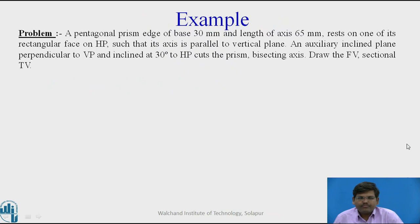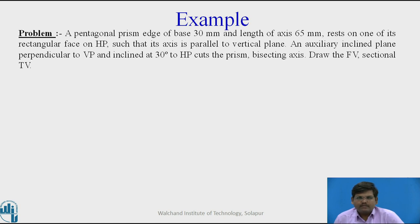Let us move further and consider an example. A pentagonal prism, edge of base 30 mm and length of axis 65 mm, rests on one of its rectangular faces on HP such that its axis is parallel to VP. An auxiliary inclined plane perpendicular to VP and inclined at 30 degrees to HP cuts the prism bisecting the axis. Draw the front view and sectional top view.